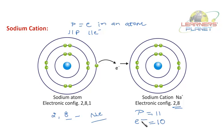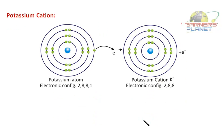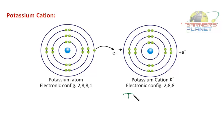Let's take another cation example — the potassium atom. Its electronic configuration is 2, 8, 8, 1. It will lose 1 electron and attain the noble gas configuration 2, 8, 8, forming a potassium cation. In the potassium cation, the number of protons is equal to 19 whereas the number of electrons is equal to 18.